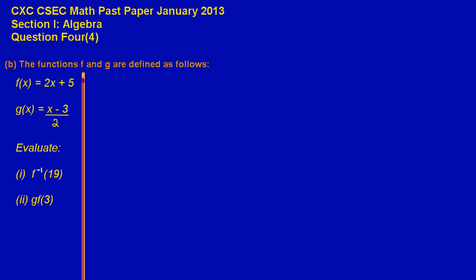Nice having you again my friends. In this video we're going to be looking at the solution to the January 2013 CSEC math exam past paper question 4b. It states that the functions f and g are defined as follows: f of x is equal to 2x plus 5, g of x is equal to x minus 3 upon 2. They're asking us to evaluate in part 1, f inverse of 19.